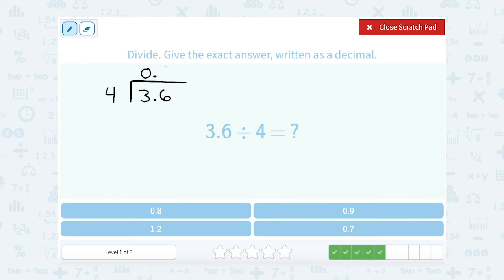4 does go into 36. 4 goes into 36 nine times. 9 times 4 is exactly 36. So that leaves me with 0 remainder. So the answer here would be 0.9.